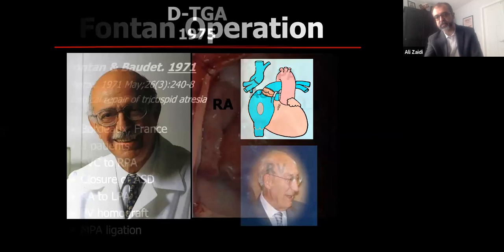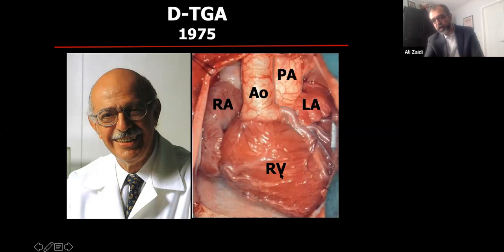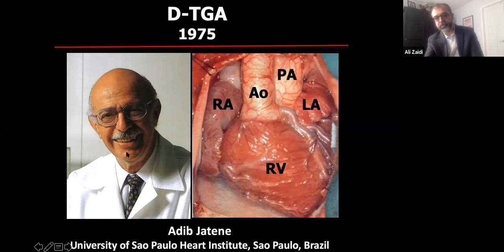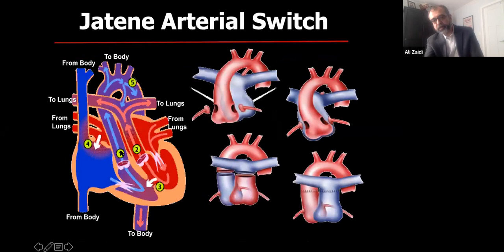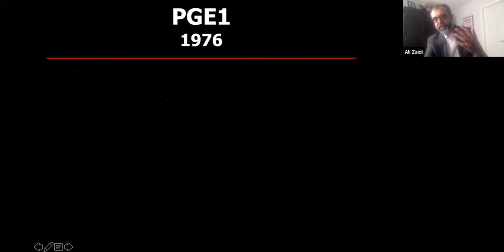In 1975 in Brazil, Adib Jatene — a surgeon — asked why we're doing complex atrial surgery for transposition when really what's needed is transecting above the great vessels and doing a switch: moving the aorta to arise from the left ventricle and the pulmonary artery from the right ventricle. The challenge is that the coronary arteries must also be moved — very complex, very minute, very finessed surgery. But the arterial switch operation changed the shape of congenital heart disease surgery.